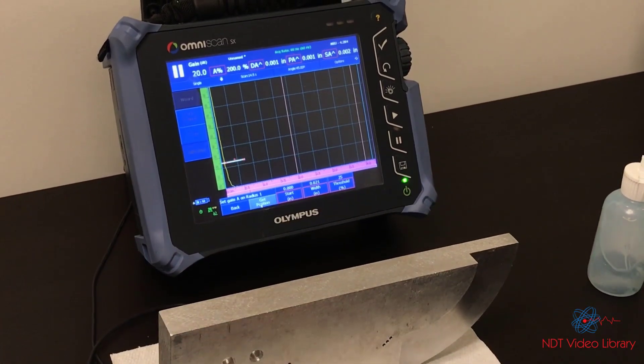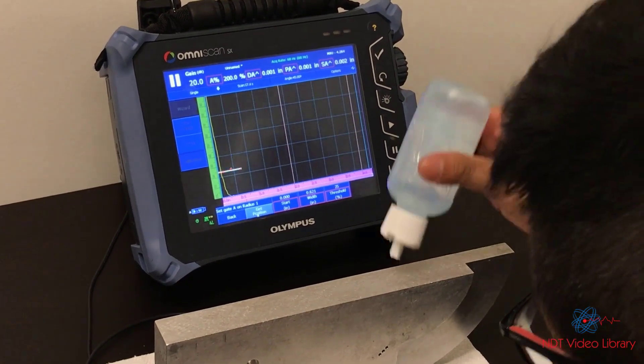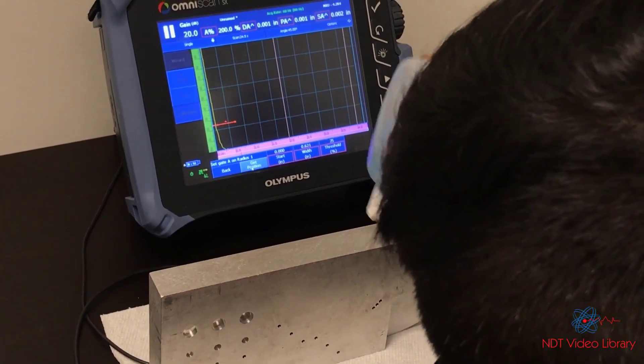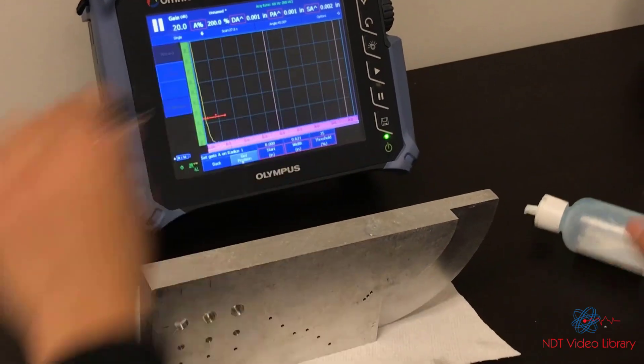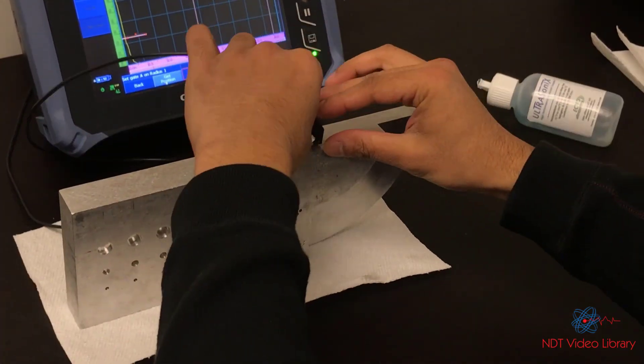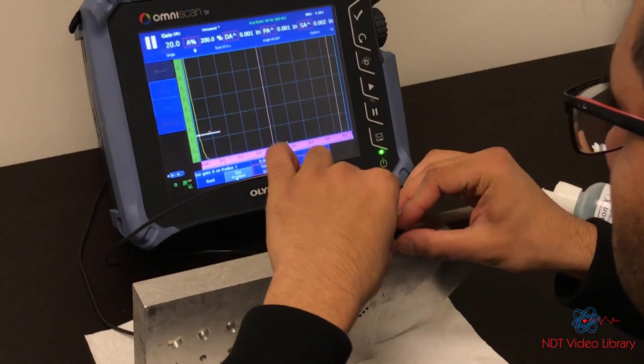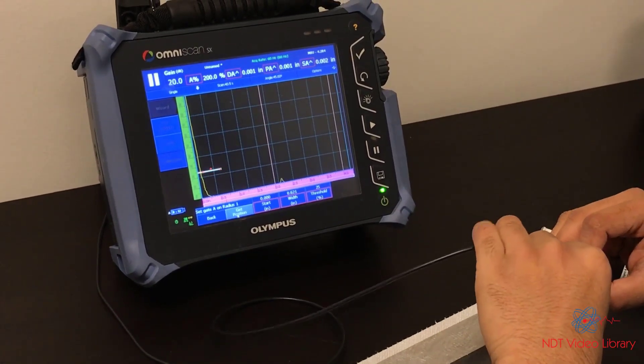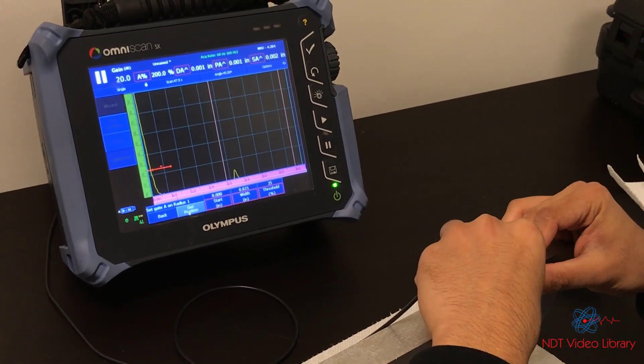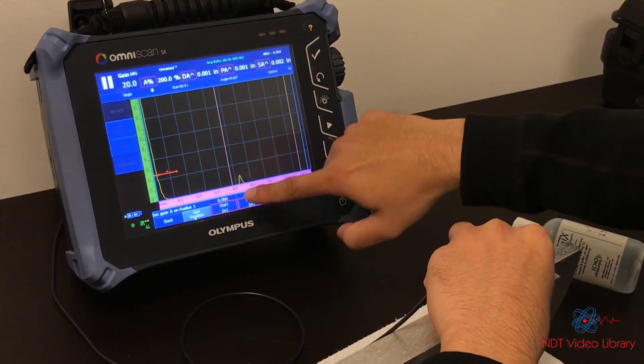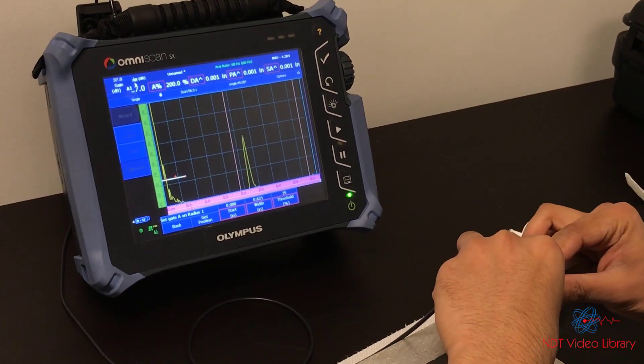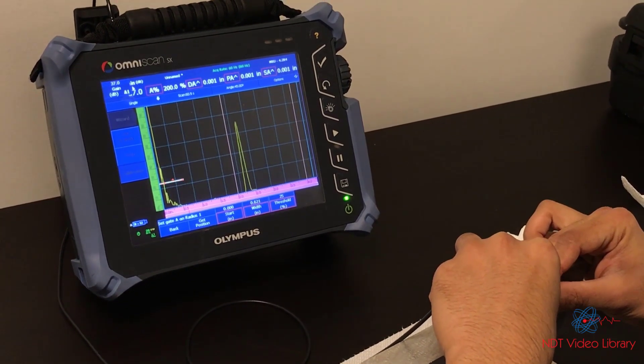Set gate A on radius 1. I need to get the signal for radius 1. I'm going to place my transducer right somewhere about this line because that's kind of the center for this radius. I place it there, try to get a signal, and move it back and forward till it maximizes. You can see that little signal right there. I need to bring it to 80%, so increase the gain.